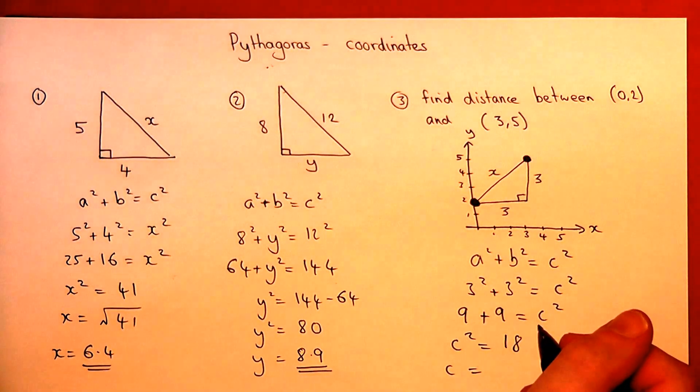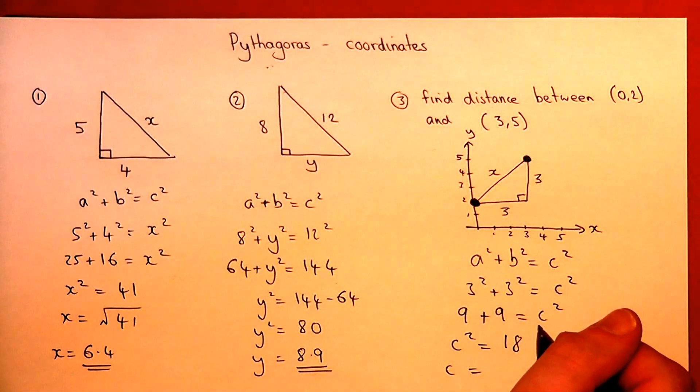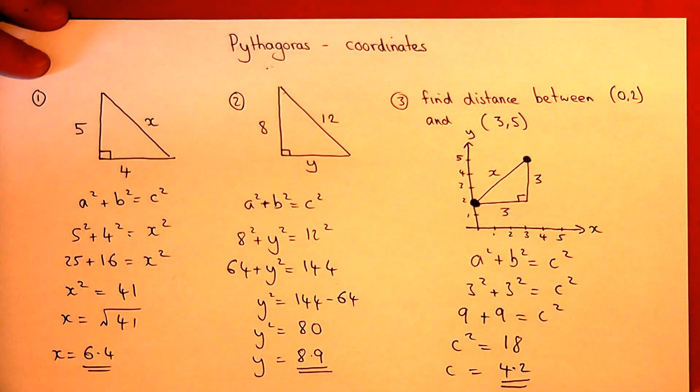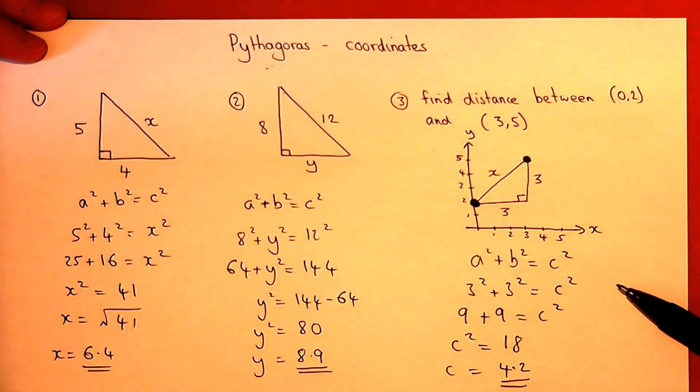So to find c, I do the square root of 18, and the square root of 18 gives us an answer of 4.2. So c has got a length of 4.2.